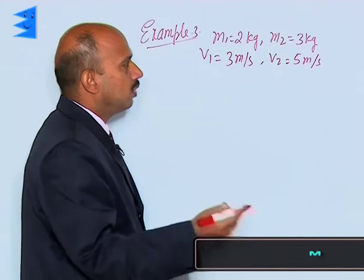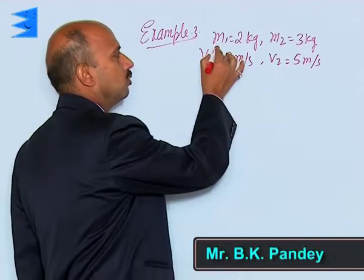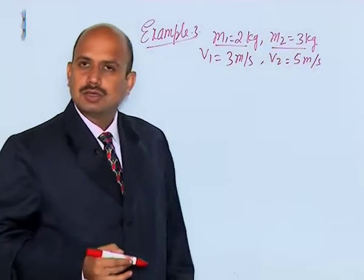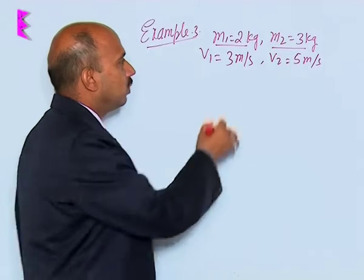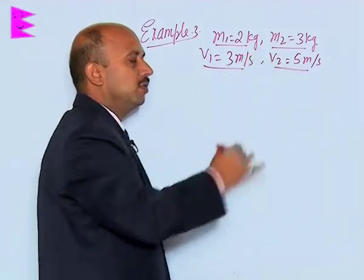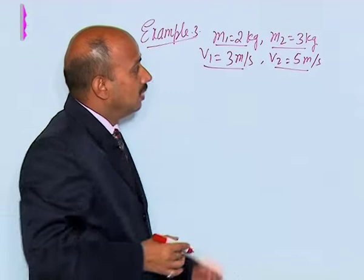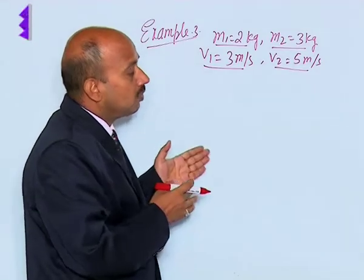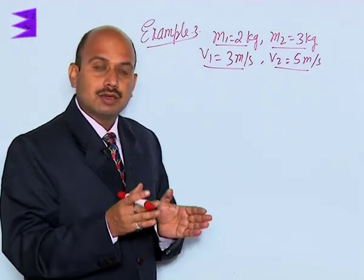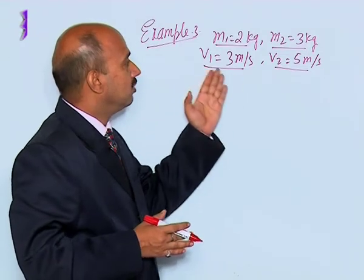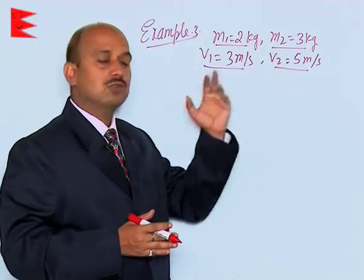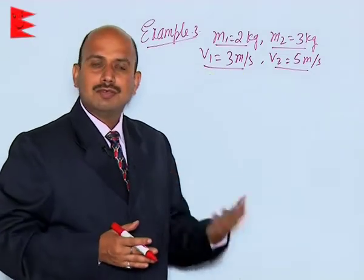In this example, there are two bodies: one is of mass 2 kg, another is of mass 3 kg. The first one has a speed of 3 meters per second, the second one has a speed of 5 meters per second. These two bodies are moving in the same direction, so you can write V1 equal to plus 3 and V2 equal to plus 5.